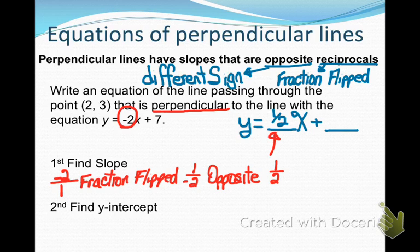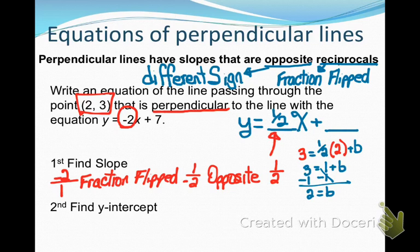Now to find my y-intercept, I'm going to use the same process as I did before. I'm going to use the point that they gave me, 2, 3. Instead of y in my equation, I'm going to put 3, I'm going to use my nifty slope of 1 half, I'm going to replace the x with 2 and say plus b. I'm going to simplify, solve, and I get that my y-intercept is 2. So 2 goes into my equation. So the equation of a line that is perpendicular to y equals negative 2x plus 7 and goes through point 2, 3 is y equals 1 half x plus 2.